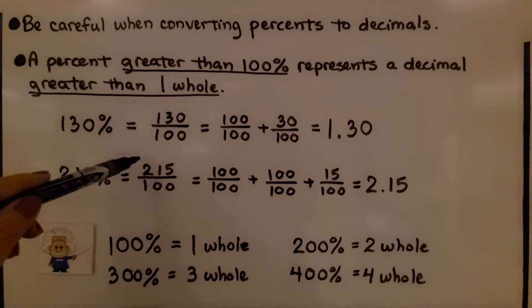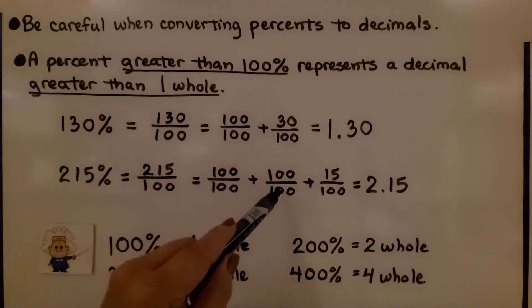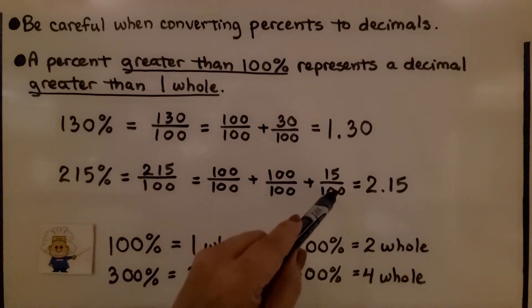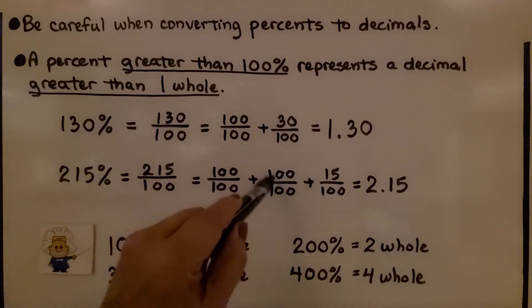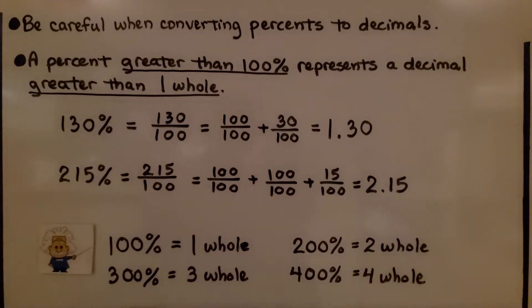For 215%, that's 215 hundredths, that would be 100 hundredths plus 100 hundredths plus 15 hundredths. We have 1 whole, 2 whole, and 15 hundredths. We have 2 and 15 hundredths.